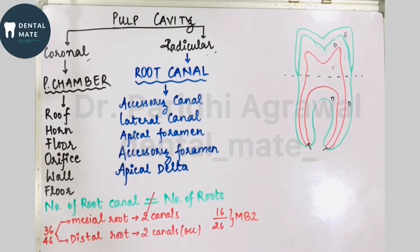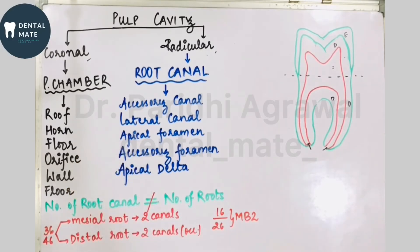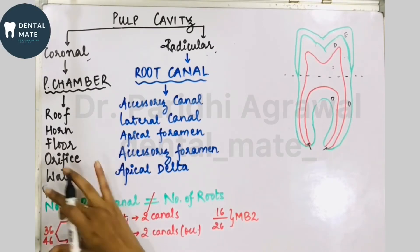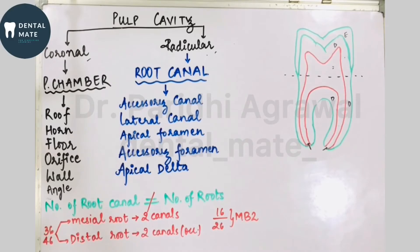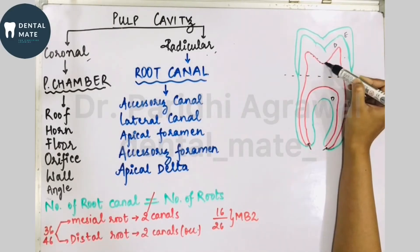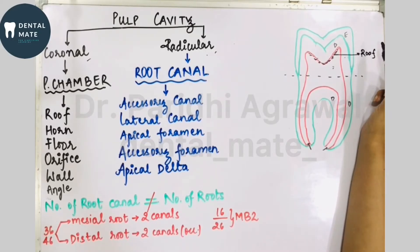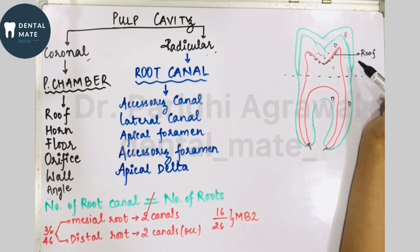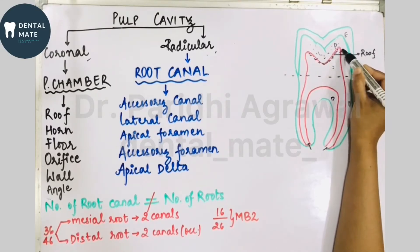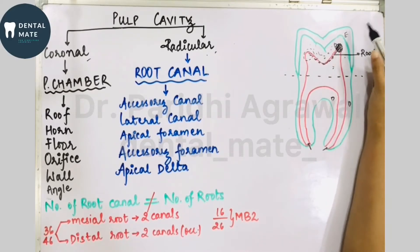The pulp chamber has various structures: the roof, horn, floor, orifice, and wall. The roof of the pulp chamber is the dentine covering on the occlusal or incisal side. The pulp horns are the accentuations of the pulp in the developmental lobes — these projections of the pulp are called pulp horns.